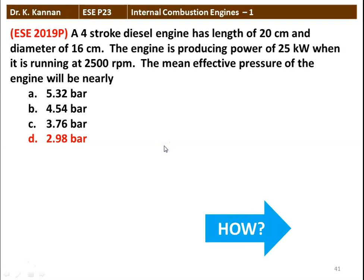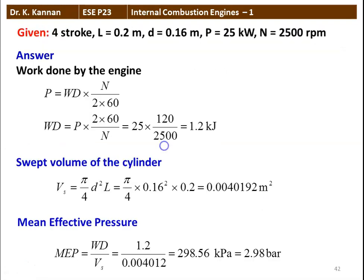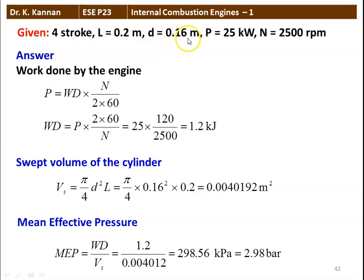We will see how in the next slide. Given data: it is a 4-stroke cycle engine, stroke length equal to 0.2 meter, diameter equal to 0.16 meter, power equal to 25 kilowatt, speed 2500 rpm.